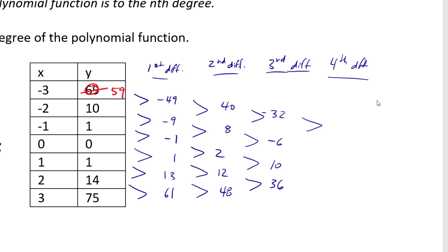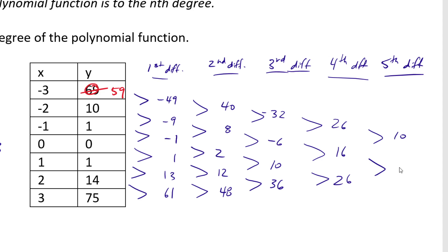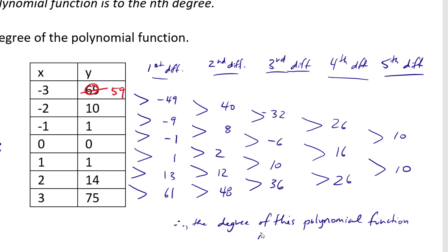For fourth differences: subtracting gives 26, then 16, 15, and 26 — still not constant. Moving to fifth differences: 10, 10, 10. By the time we reach the fifth difference we have a constant value, so the degree of this polynomial function is 5.